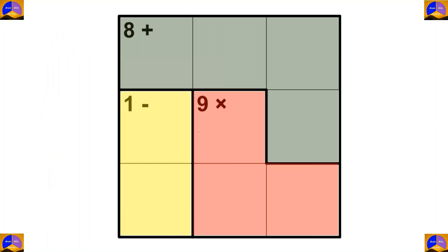Let's solve another puzzle. This will be cage A, this will be cage B, and this will be cage C. In cage A there are four cells and the operation is addition — after adding, the result must be eight, so the only option is one plus two plus three plus two.